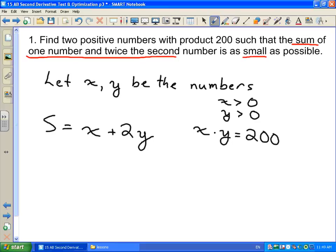We can use this relationship over here, x times y equals 200, to say that y is equal to 200 divided by x. And then we can sub that into this expression that we want to optimize. So our sum is now x plus 2 times 200 divided by x. And this is what we're going to optimize here.